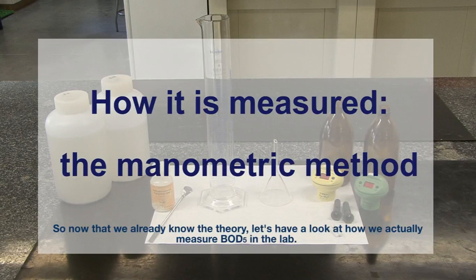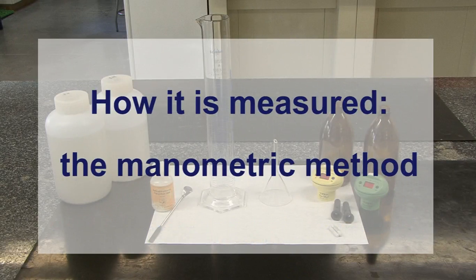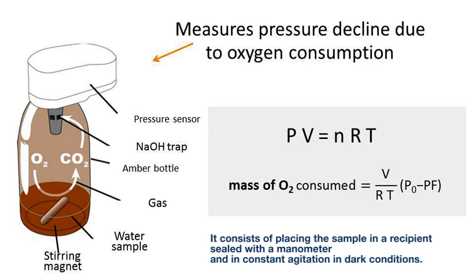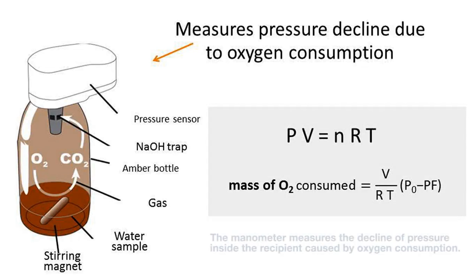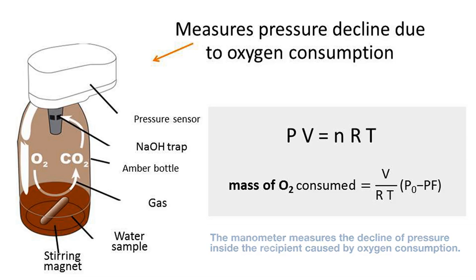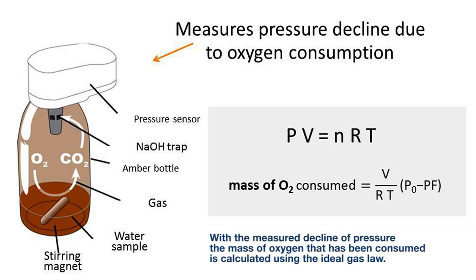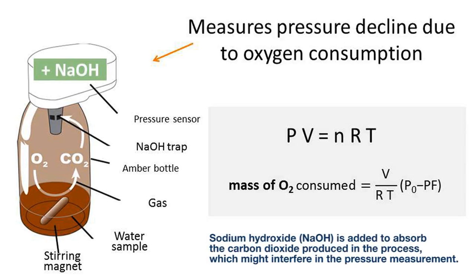Now that we already know the theory, let's have a look at how we actually measure BOD5 in the lab. It consists of placing the sample in a recipient sealed with a manometer and in constant agitation in dark conditions. The manometer measures the decline of pressure inside the recipient caused by oxygen consumption. With the measured decline of pressure, the mass of oxygen that has been consumed is calculated using the ideal gas law. Sodium hydroxide is added to absorb the carbon dioxide produced in the process, which might interfere in the pressure measurement.